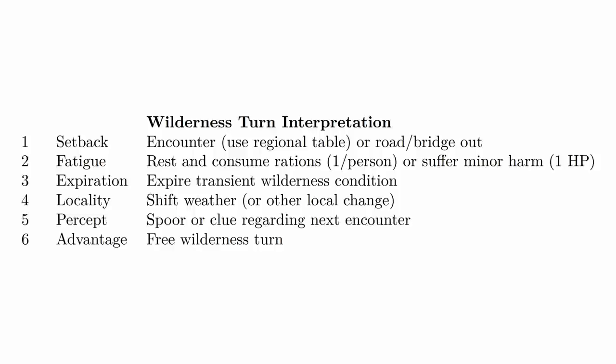In Knave's 2nd Edition, I do have rest here, but I move the use of rations down to the expiration result as a way to tax your rations. In the official Hazard System, expiration says to expire a transient wilderness condition, which is a bit vague. I use that to expire things in your inventory like rations, or perhaps monster parts you've cut off and are trying to sell or turn into potions. Knave 2nd Edition is a very resource-driven game, and traveling for long periods across the wilderness means stuff in your inventory could start degrading or expiring. Number four, locality, is shift weather or other local change — I have a whole random table system for generating weather depending on the season. Number five is a percept, a spore or clue regarding the next encounter. And six is advantage, a free wilderness turn where nothing bad happened.